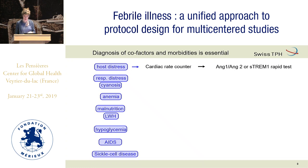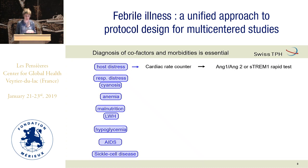We want something better — like one of Kevin's tests. In adults, S-TREM1 was a good predictor of mortality. NG1, NG2 — we need to develop rapid tests based on these host factors.